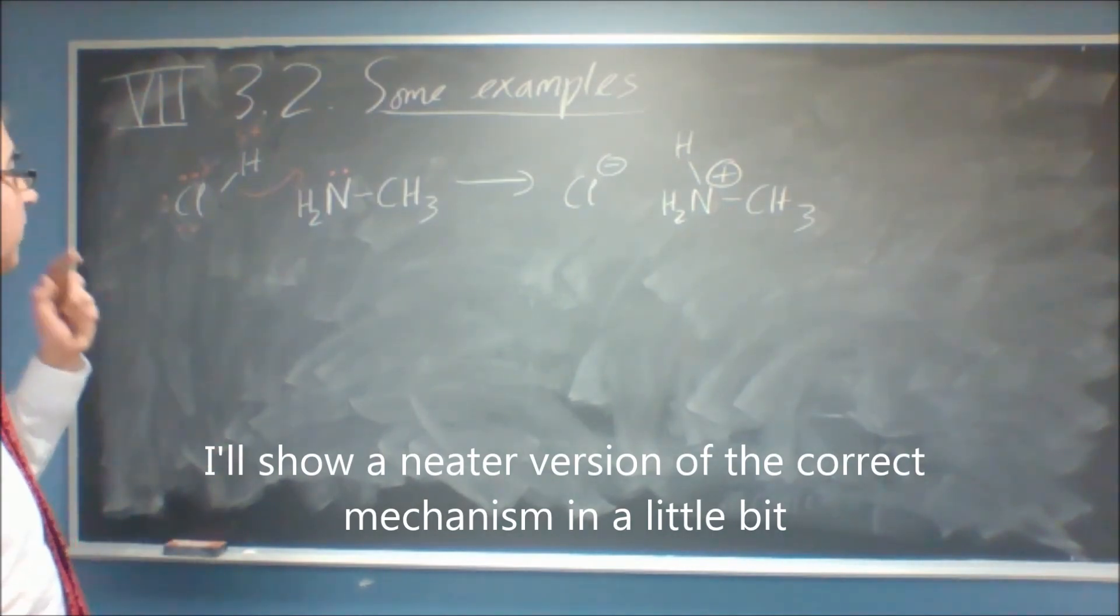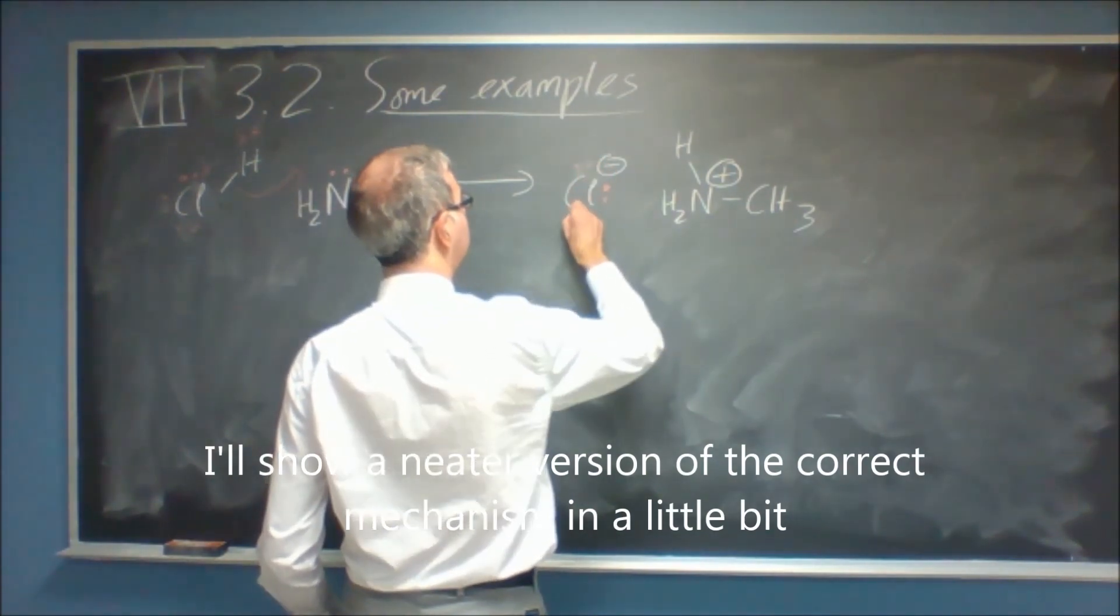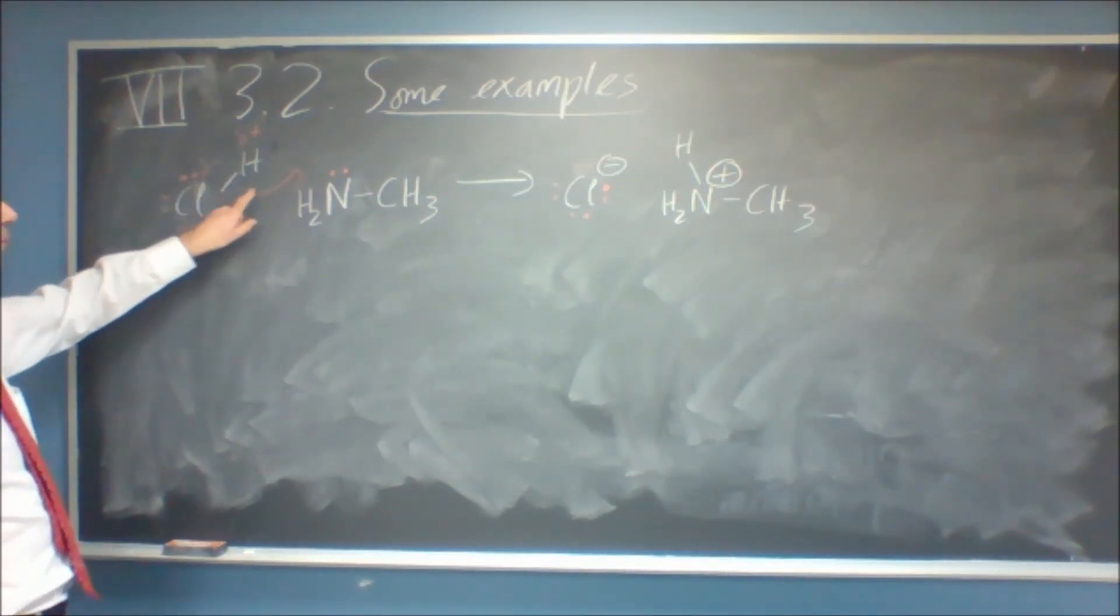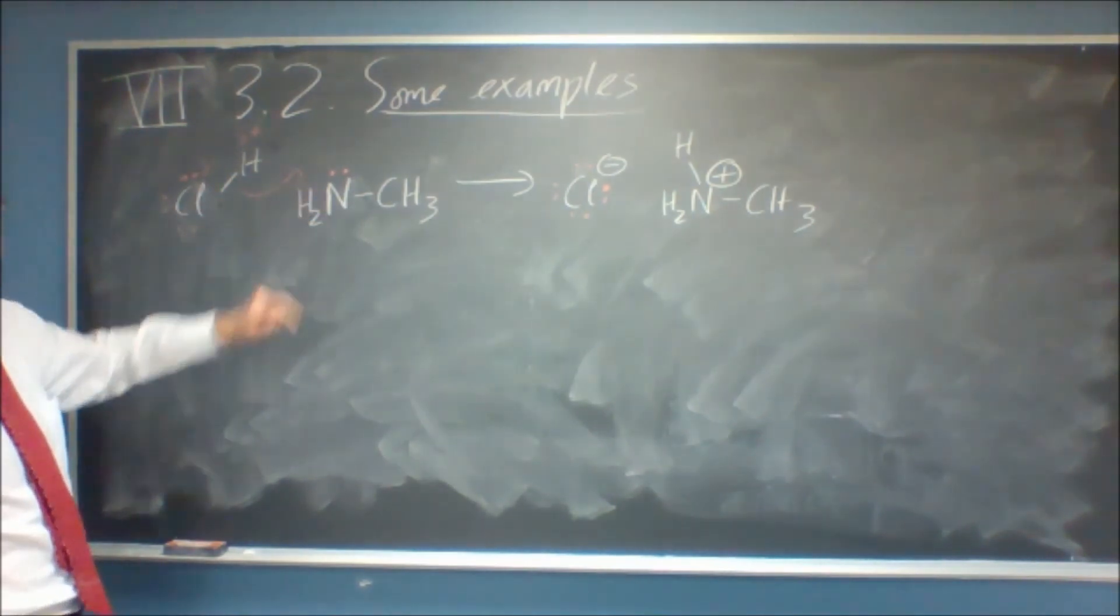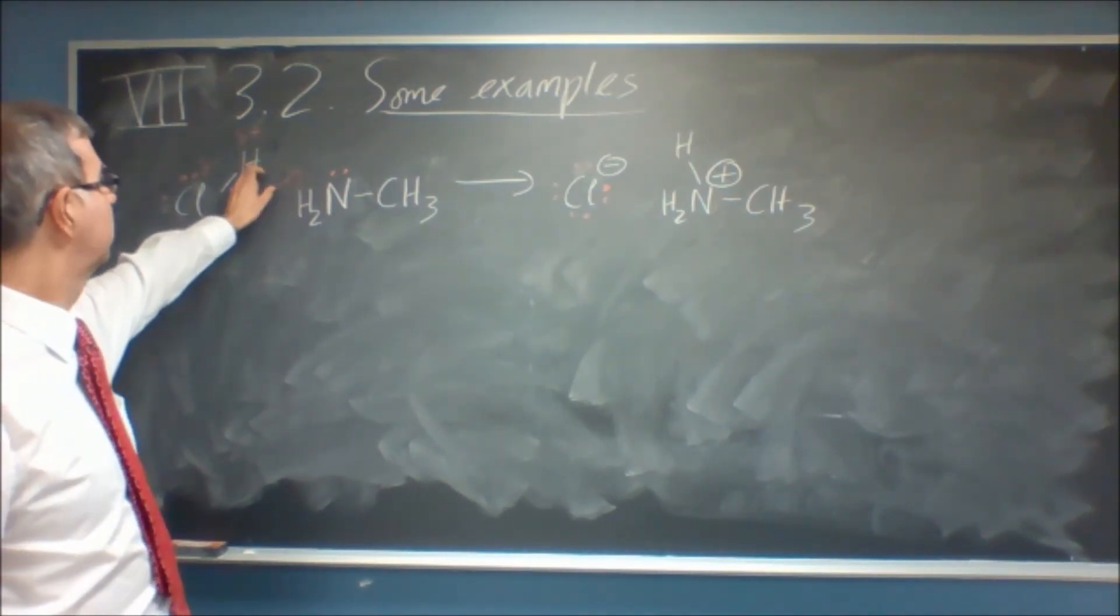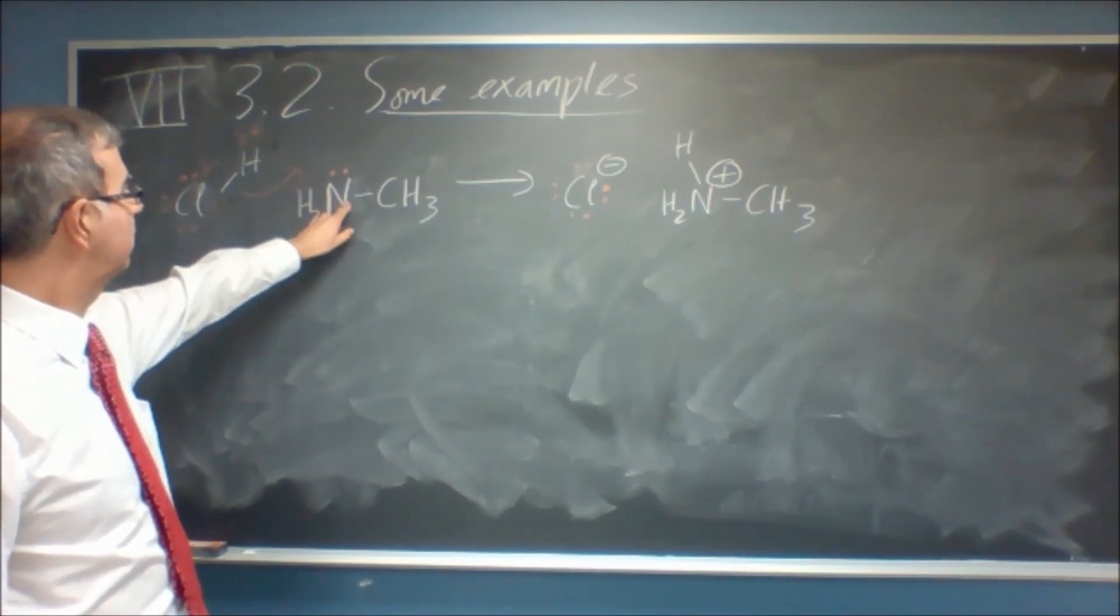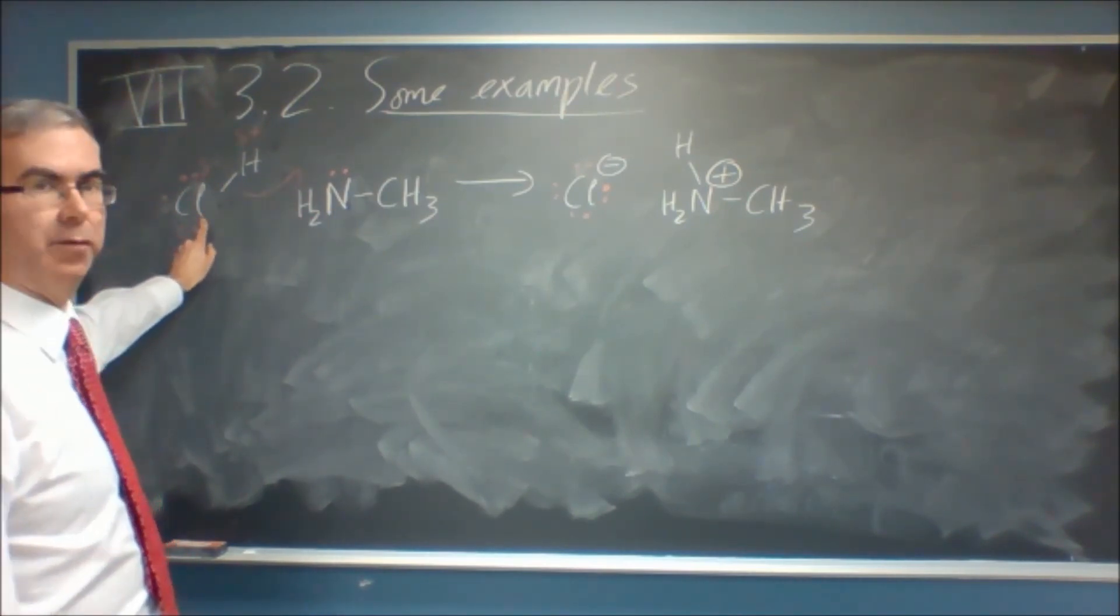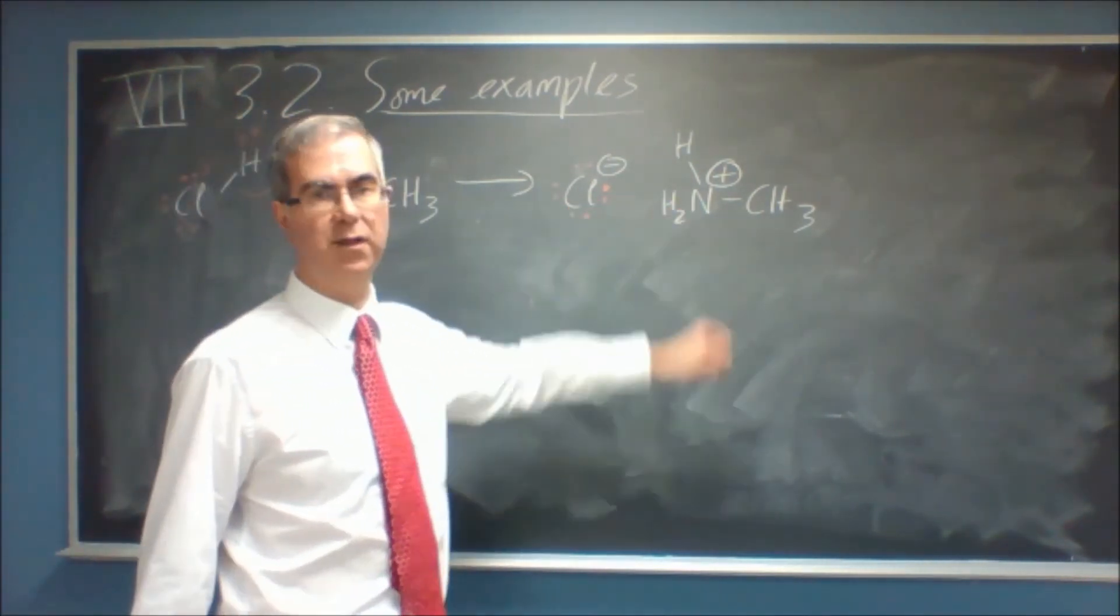But, unfortunately, that's wrong. Because we have to show the flow of electrons. We are going to break this bond, but if you look, the pair of electrons have to go onto here, not onto here. So, once we remember this is a pair of electrons that's moving and not the atom, we would realize this atom, this nitrogen, would go one minus, and this chlorine would go one plus, because that's the direction of the arrow. And you can see the other way around.